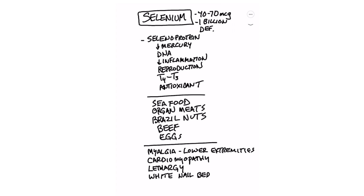Myalgia — muscle pain in the lower part of your body — is an indication that you need selenium. Cardiomyopathy, a heart problem, also signals a need for selenium as it's an antioxidant. If you're lethargic, you're sometimes deficient in selenium. And if you have white nail beds, that means you need selenium.